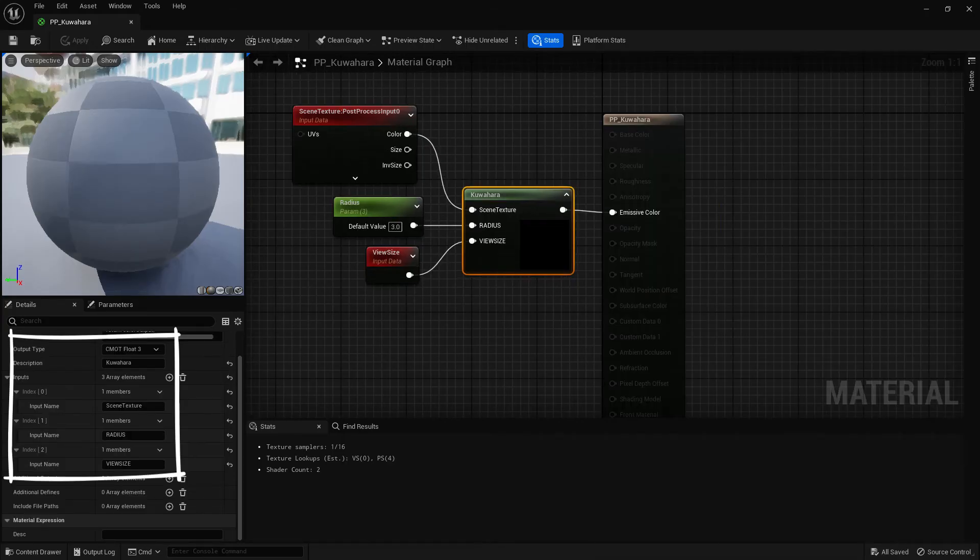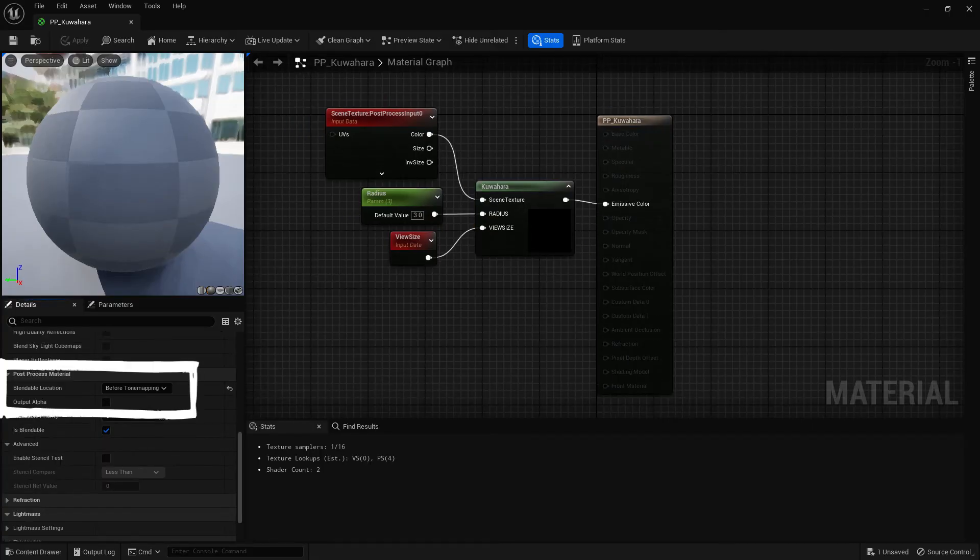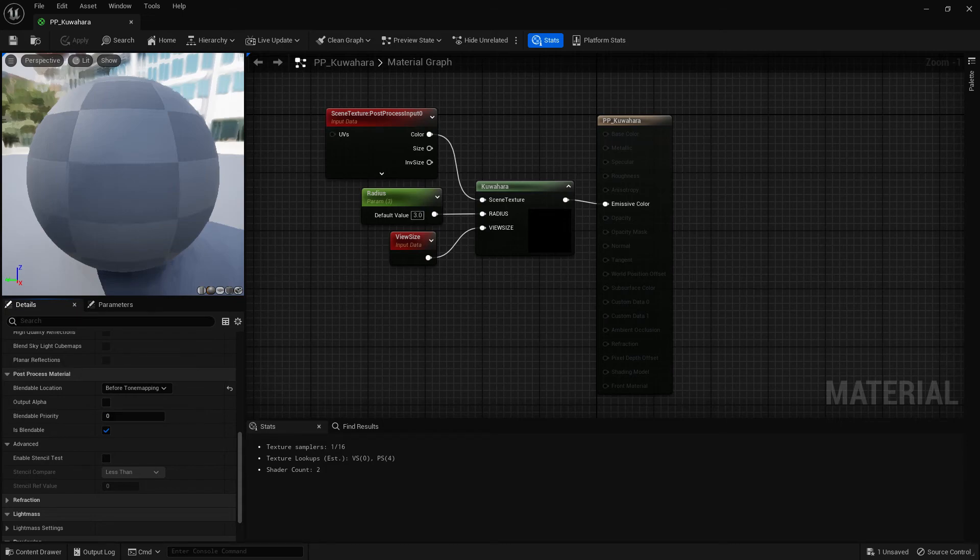We need to also define the inputs expected in the code and the output type. Use the same names as displayed here for the radius and view size. You can set your material blendable location to either before or after tone mapping. You can try both options to see how the appearance changes.